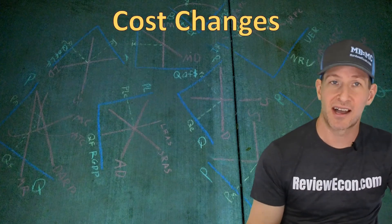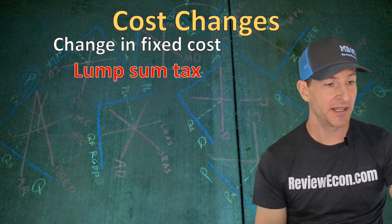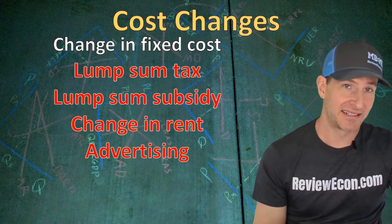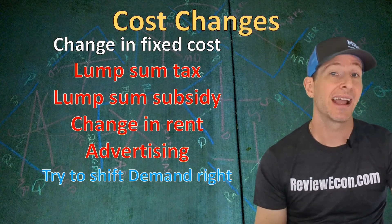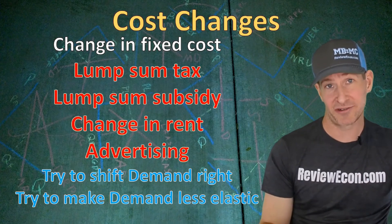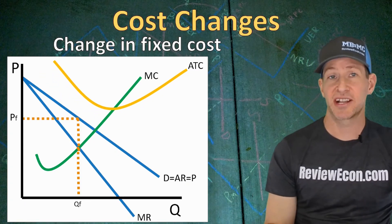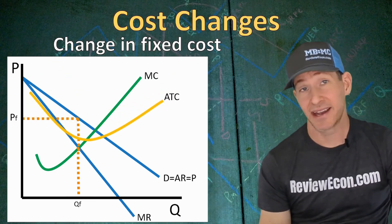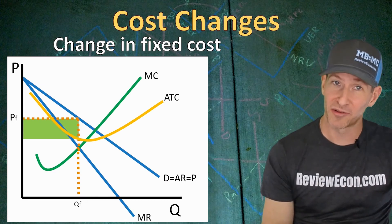Finally, we'll talk about changes in costs and how those impact monopolistically competitive firms. For fixed cost changes: examples include a lump sum tax or subsidy from the government, a change in rent, or advertising — which is a fixed cost. Monopolistically competitive firms often advertise to shift demand to the right and decrease the elasticity of their demand curve, making consumers less sensitive to price increases. On the graph, an increase in fixed cost shifts the ATC upward without changing the profit maximizing quantity or price — it only creates economic losses. A decrease in fixed costs creates economic profits. Both are short run changes since firms break even in the long run.